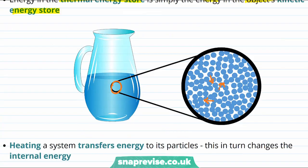This is interesting because now we can realize that heating a system, or adding heat energy to a system, is all about transferring energy to the particles that make it up. And this in turn changes the internal energy of the substance. So heating is all about internal energy.